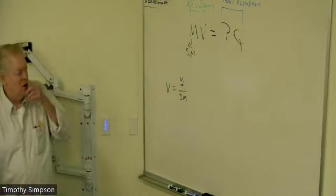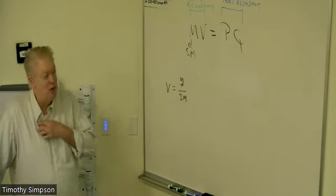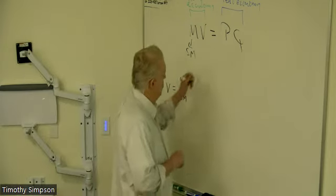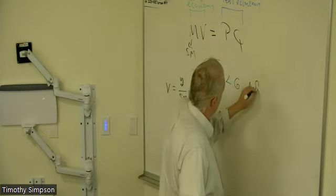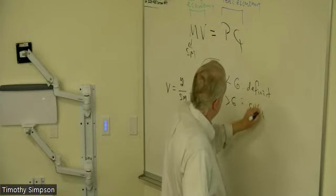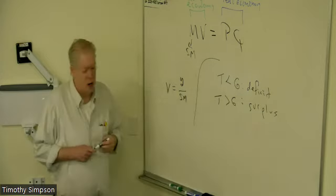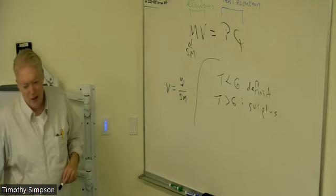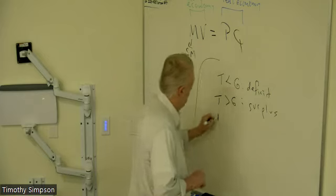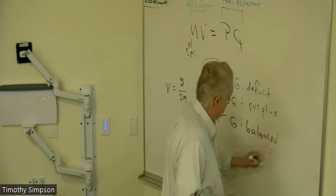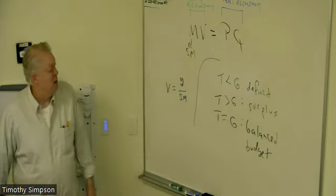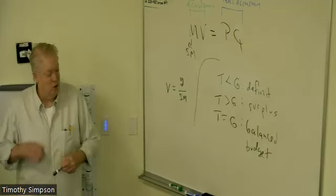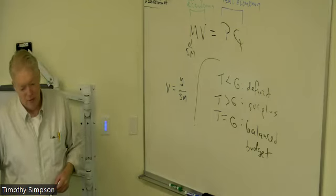There are questions about fiscal policy. A budget deficit results when taxes are less than government spending — the government is spending more than it takes in. When taxes exceed government spending, we have budget surpluses. When taxes equal government spending, we have a balanced budget — though it doesn't have to balance to the penny. Usually we're in surplus or deficit, and the experience is usually deficit.